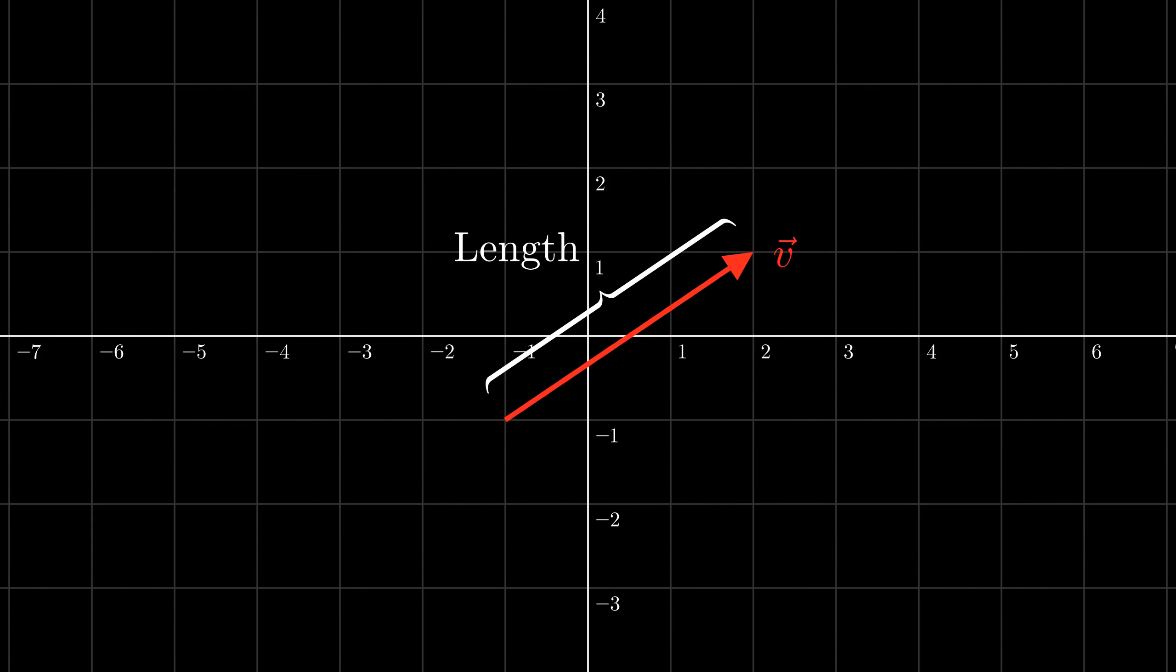Usually, when you need to find the length of a vector, the vector will be in some coordinate system, and then we can use that coordinate system to find the length. You'll figure out exactly how to do this calculation later, but with this coordinate system, the length of this vector is about 3.6.